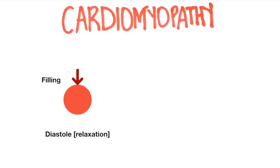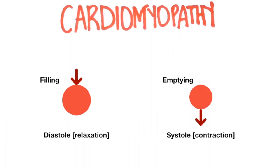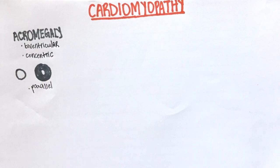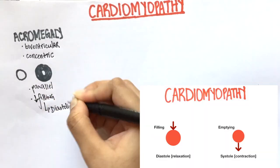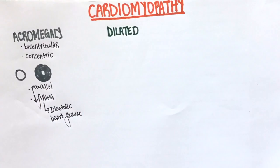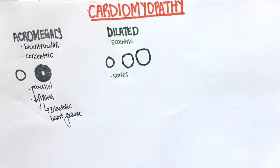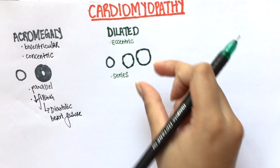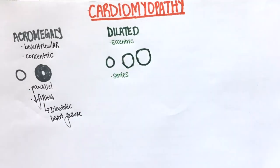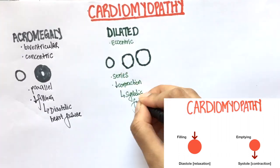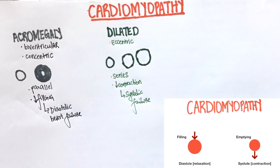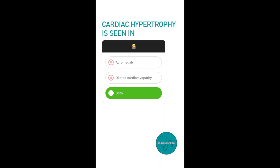This leads to a very thick ventricular wall and a very tiny ventricular chamber. Filling takes place during diastole and emptying takes place during systole. In these patients, since there is very little space, the filling is reduced, leading to diastolic heart failure. Dilated cardiomyopathy has hypertrophy as well, but this kind is known as eccentric hypertrophy. The sarcomeres are added in series, resulting in a very large chamber — giving it the name dilated cardiomyopathy. Since the chamber is big, there is enough filling, but the heart muscles aren't able to contract well, leading to systolic heart failure. In conclusion, both acromegaly and dilated cardiomyopathy are characterized by cardiac hypertrophy.